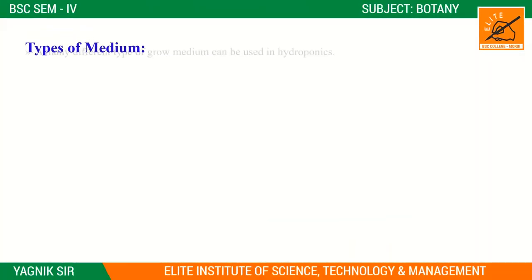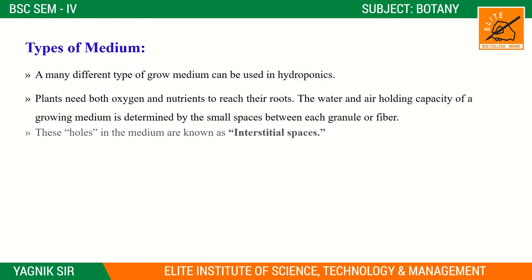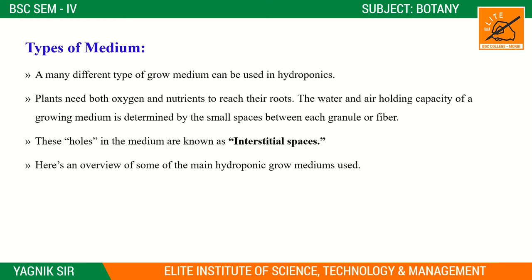So many types of growing mediums are used in hydroponics. Generally, plants need nutrients for growth and development. Plants need both oxygen and nutrients, both of which are required to reach the roots. The water and air holding capacity of growing mediums is determined by the small spaces between each granule. These holes in the medium are known as interspecial space.